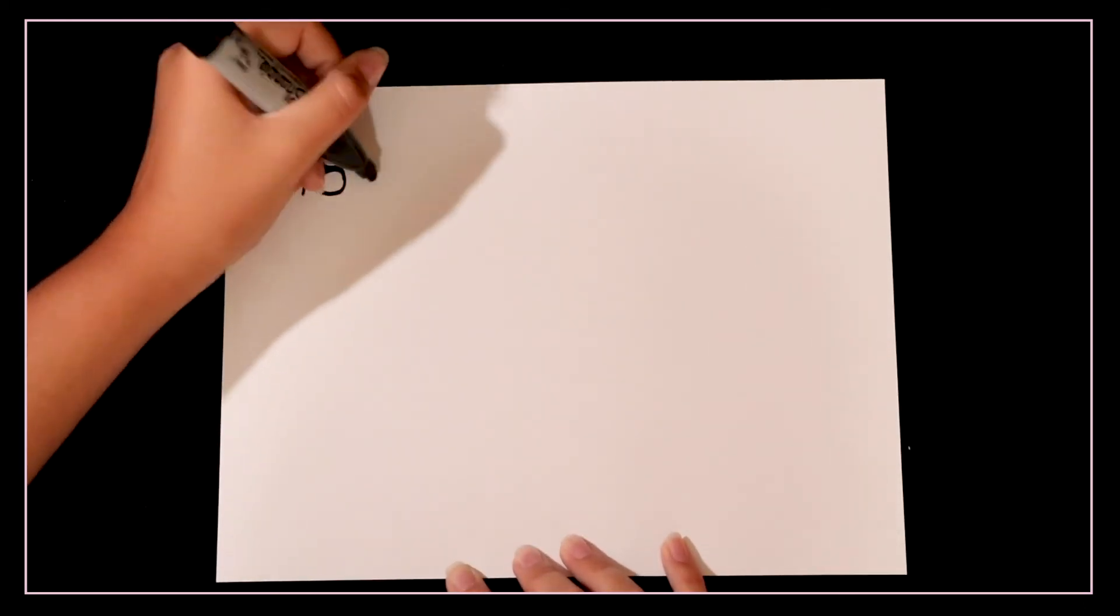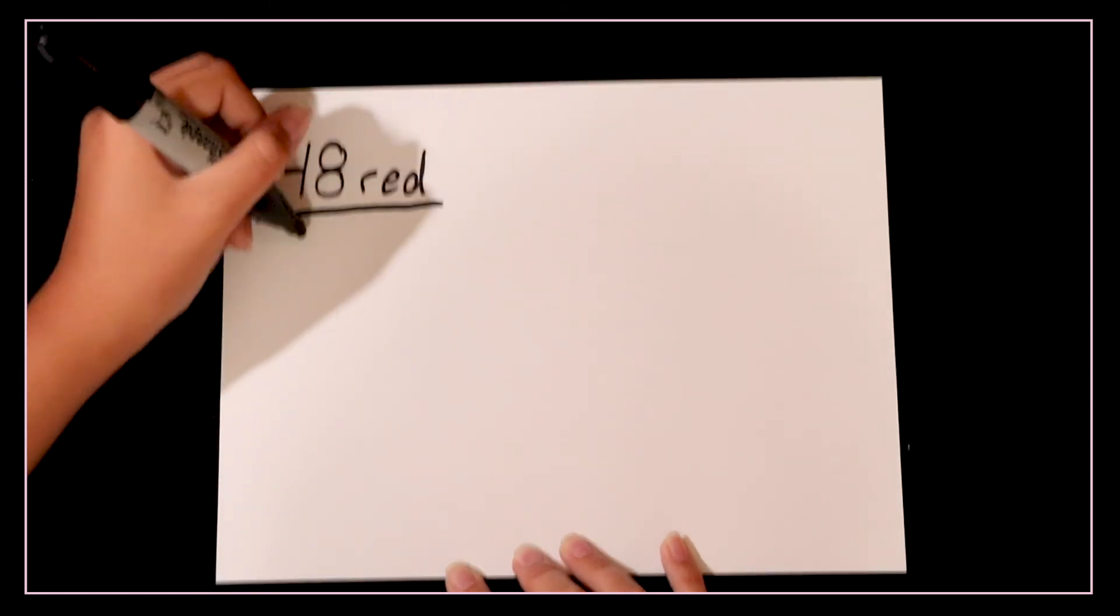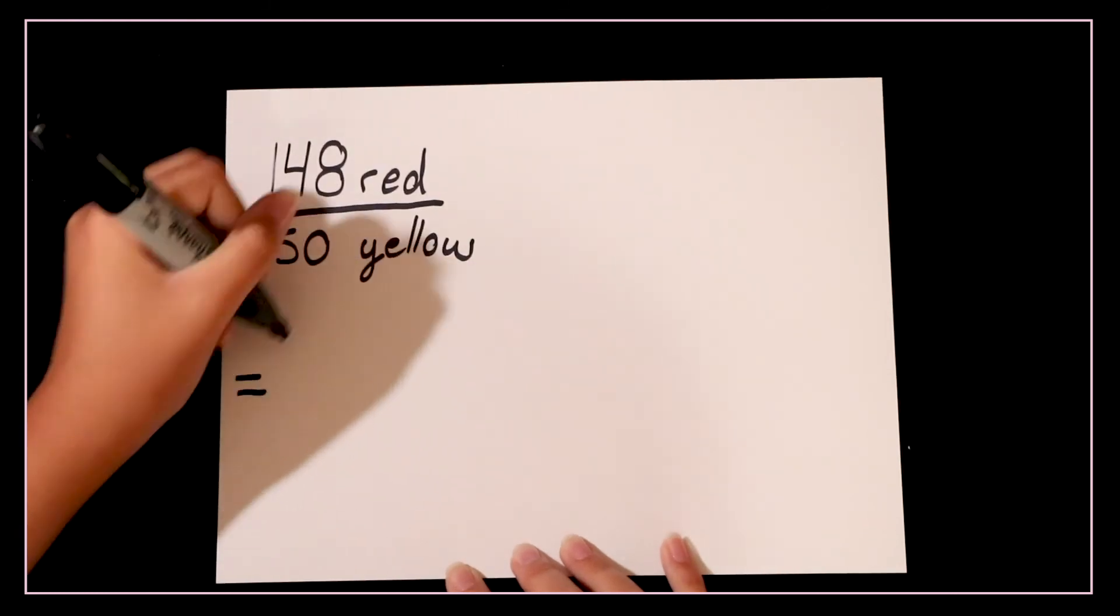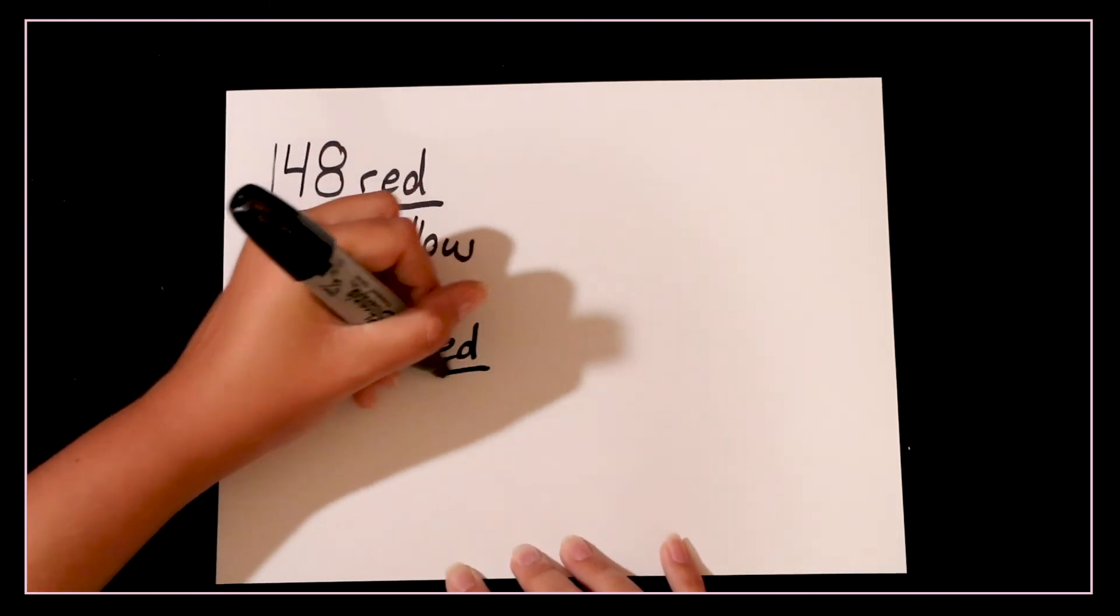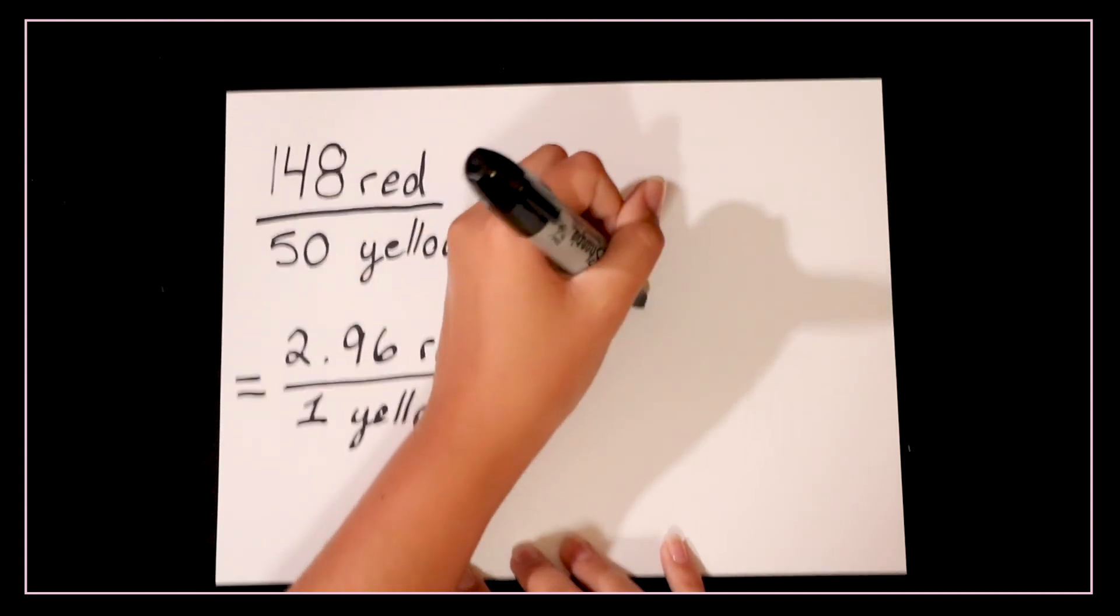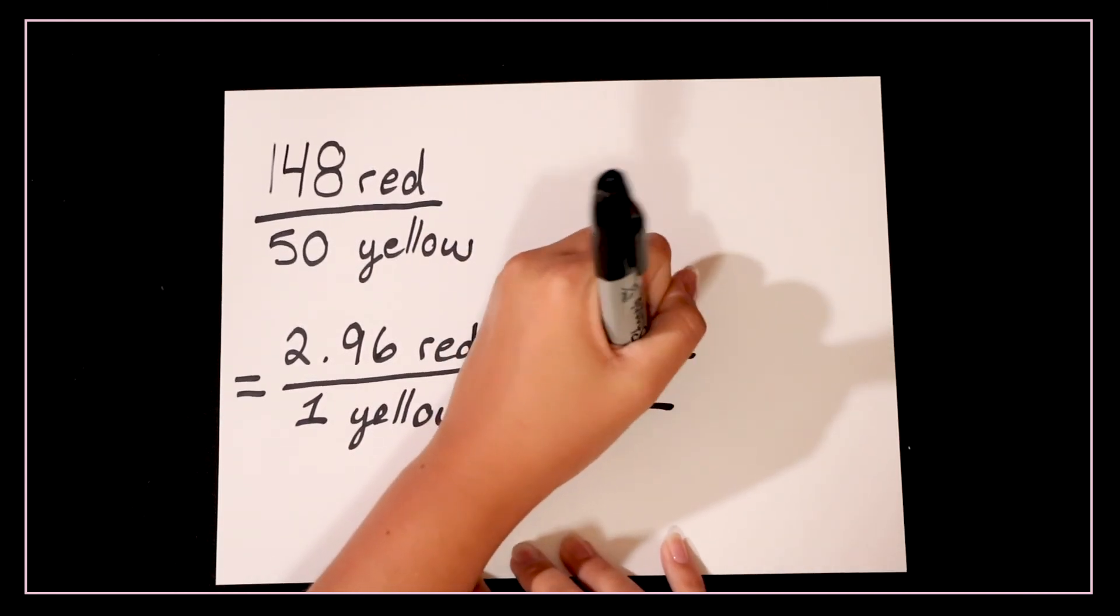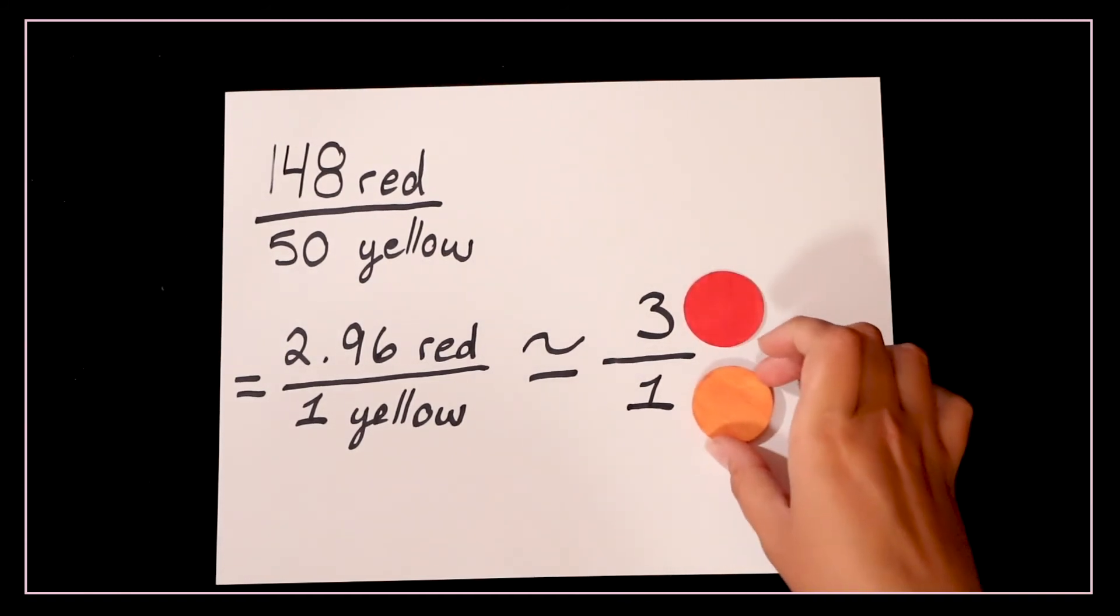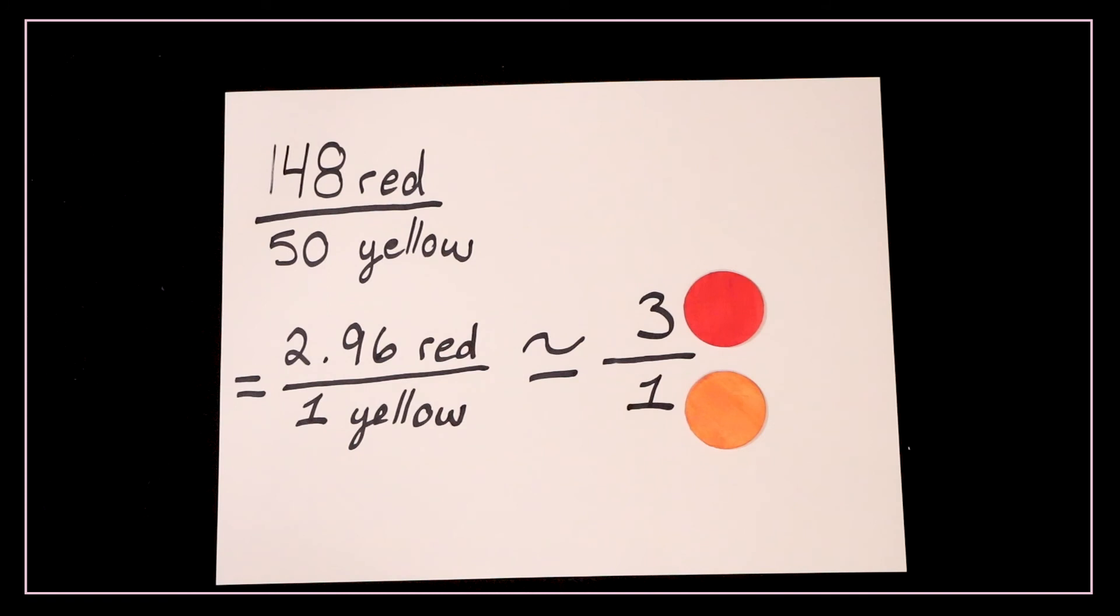We're going to start by dividing 148 by 50 to determine the ratio. This comes out to a 2.96 to 1 ratio. We can round that up to 3. Our 3 to 1 ratio reminds us of our heterozygous square. So we can guess that red is dominant. But because it's a guess we need to check our work with a Punnett square.